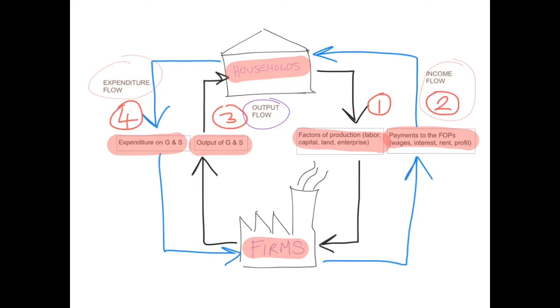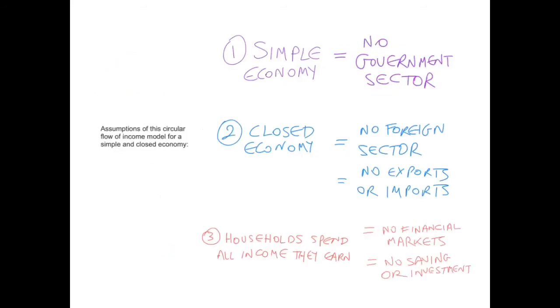Now, what are the assumptions of this circular flow of income model in a simple and closed economy? The first assumption is that it's a simple economy. This means there's no government sector, so there's no taxes and no government expenditure. The second assumption: it's a closed economy. There's no foreign sector, which means there are no exports and no imports.